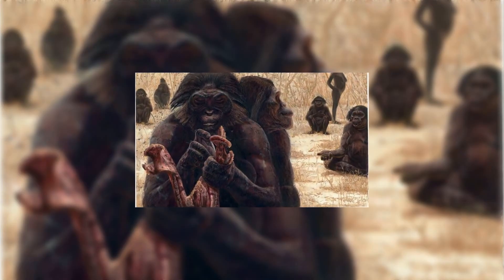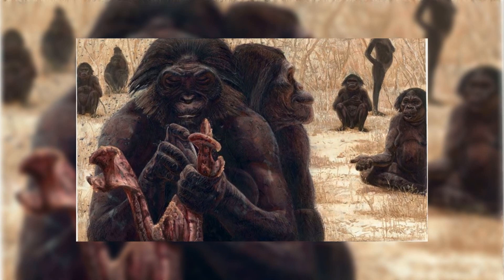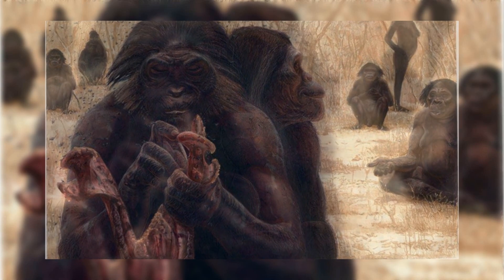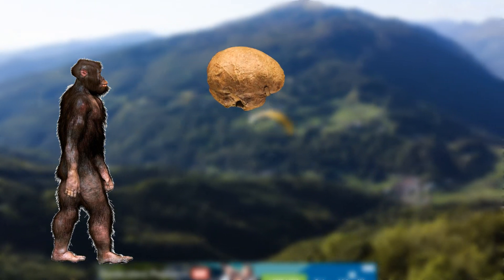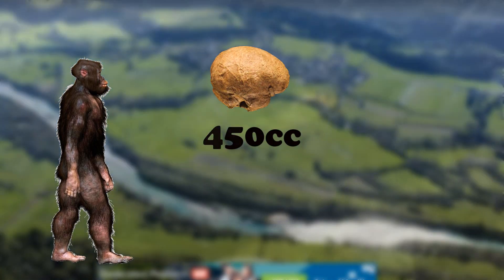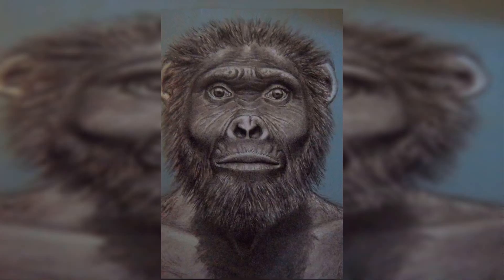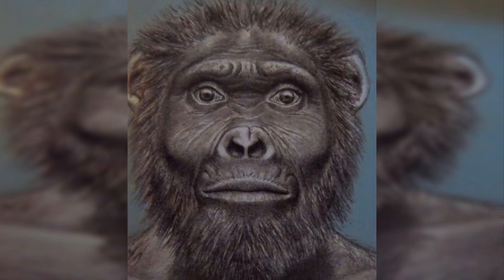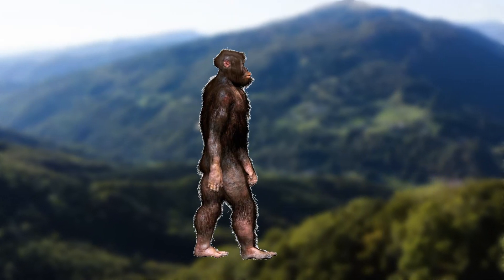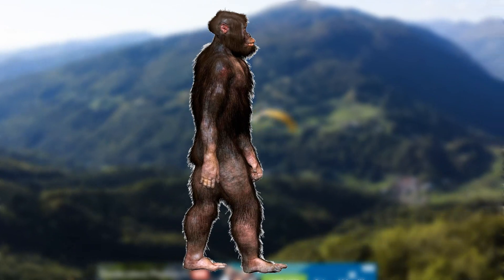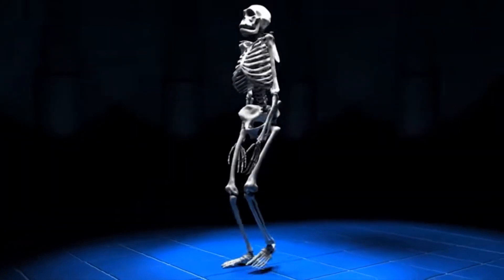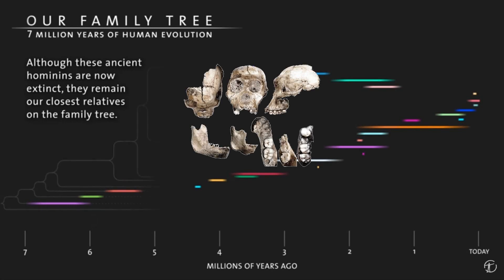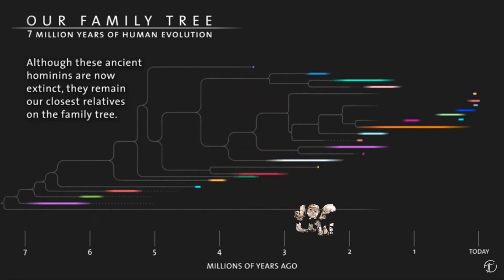Although similar to other Australopithecines, it displayed some surprising features. Individuals had long ape arms, a small brain of about 450 cubic centimeters, robust cranial, facial, and dental characteristics, and human-like longer legs, which suggests a change toward longer strides during bipedal walking.